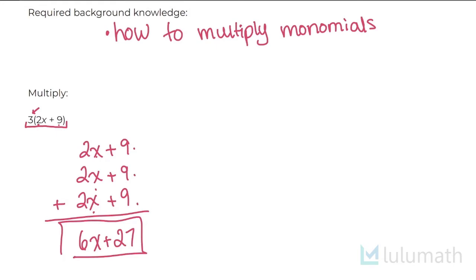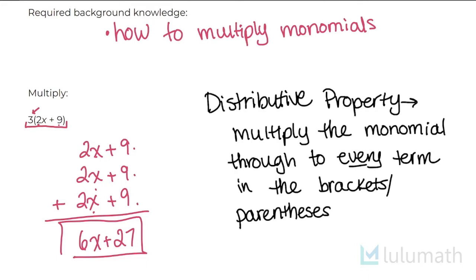But here's the thing — you're not going to want to write this out multiple times. If this number was a 10 or a 100 instead of a 3, you're not going to write it out 10 or 100 times. Also, sometimes the monomial on the outside isn't always going to be a single number; sometimes it's going to have a variable, which makes things more difficult. This is where we use the distributive property, multiplying the monomial through to every term in the parentheses.